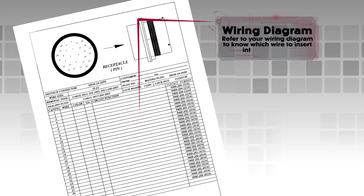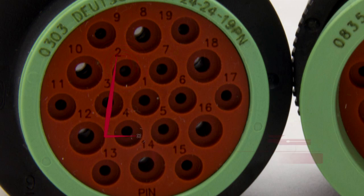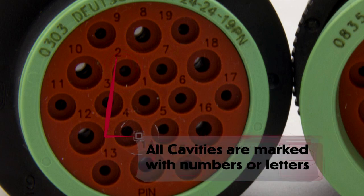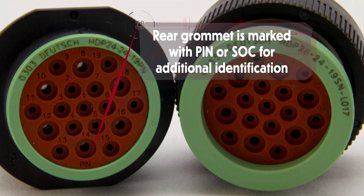Refer to your wiring diagram to know which wire to insert into each cavity. All cavities are marked with numbers or letters depending on the design. The rear grommet is marked with pin or socket for additional identification.